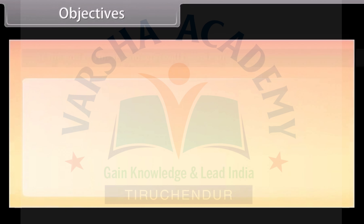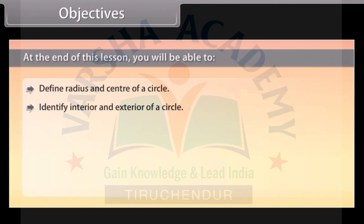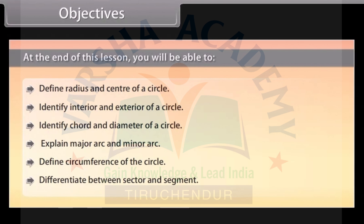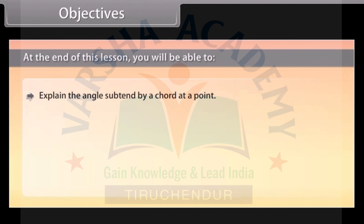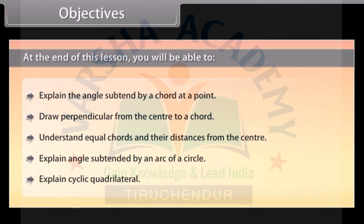Objectives. At the end of this lesson, you will be able to: define radius and center of a circle; identify interior and exterior of a circle; identify chord and diameter of a circle; explain major arc and minor arc; define circumference of the circle; differentiate between sector and segment; explain the angle subtended by a chord at a point; draw a perpendicular from the center to a chord; understand equal chords and their distances from the center; explain angle subtended by an arc of a circle; and explain cyclic quadrilateral.